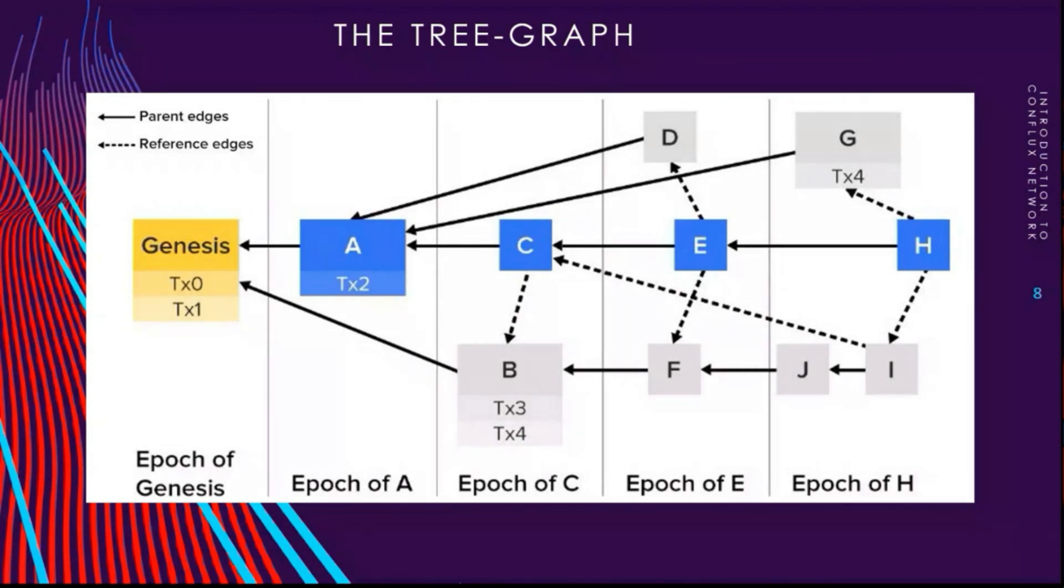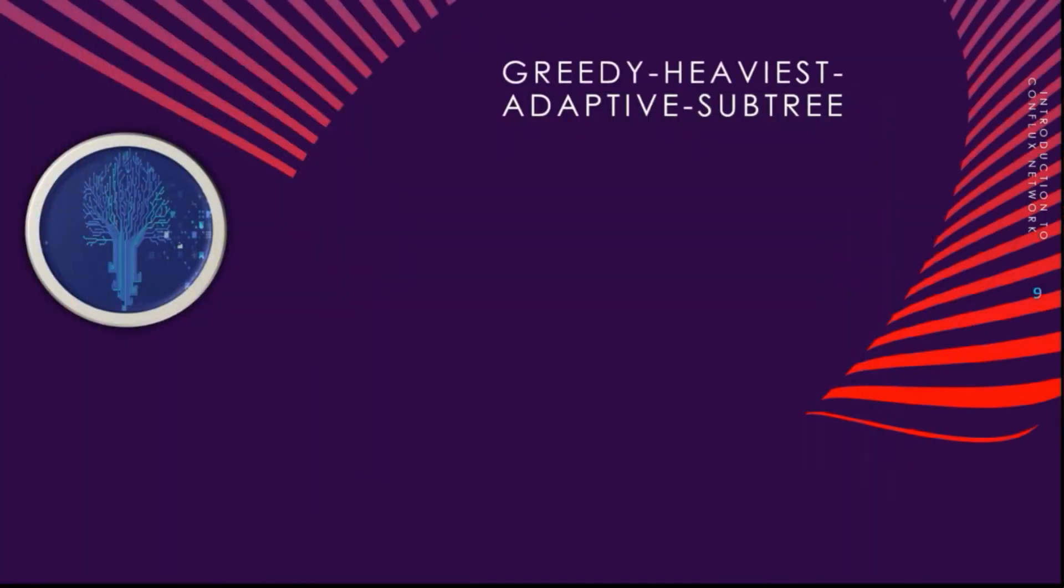Once the pivot chain is selected in the tree-graph, then by using this pivot chain and the references between blocks, Conflux arranges all the blocks in a linear sequence. This sequence determines the order in which transactions are executed. This is basically one of the biggest innovations in Conflux network and is the key of making it has the throughput and scalability it actually has. Now let's talk about the GHAST selection rule.